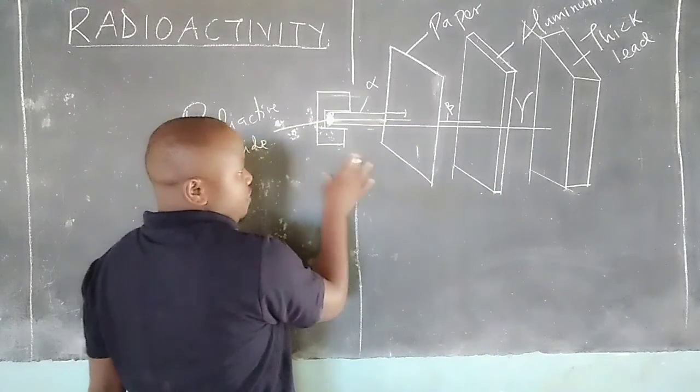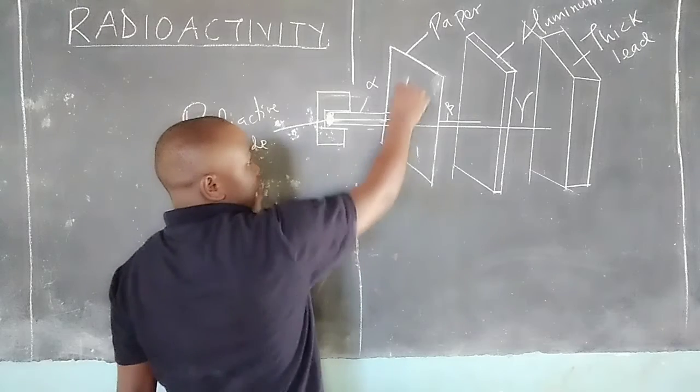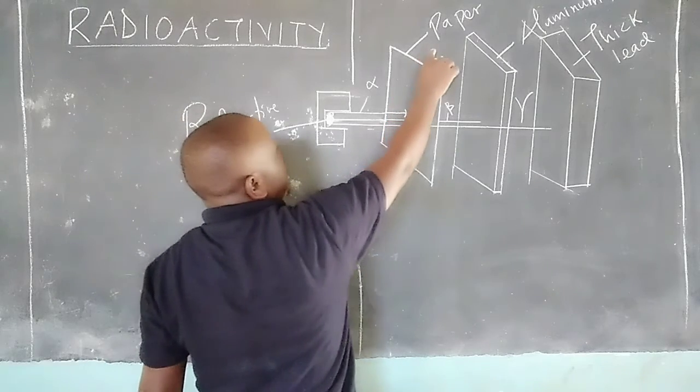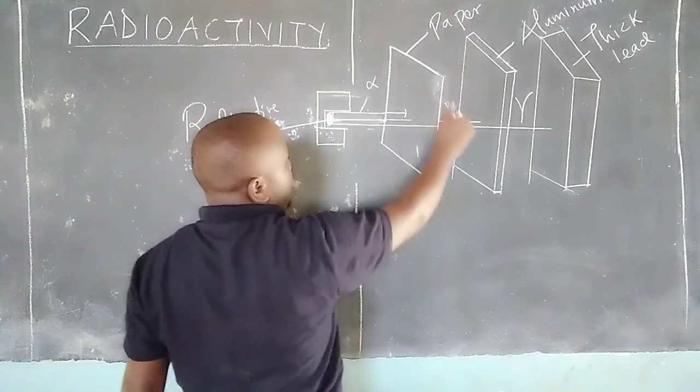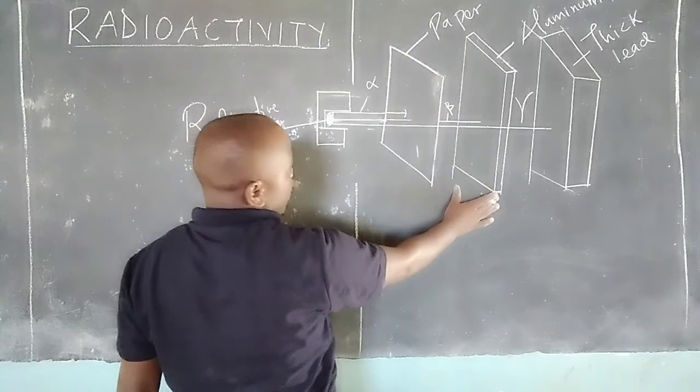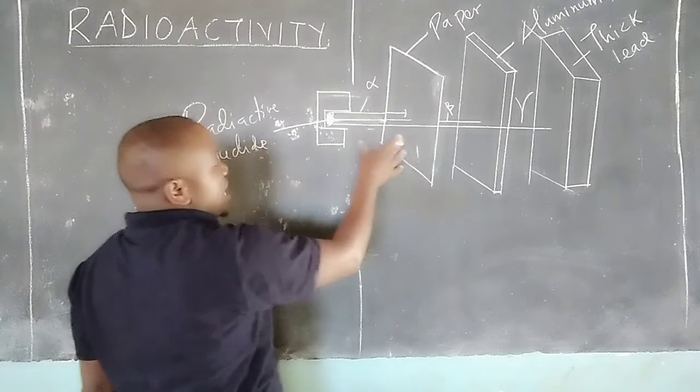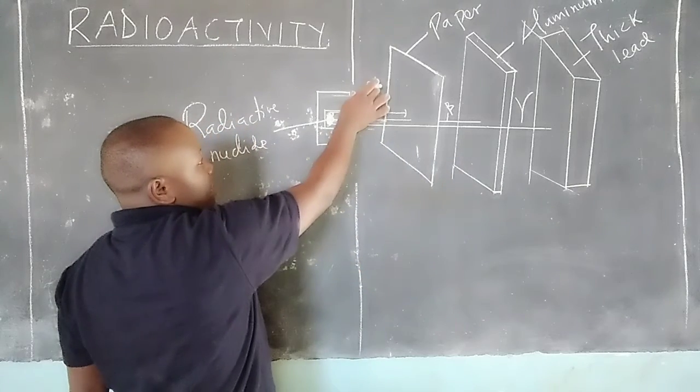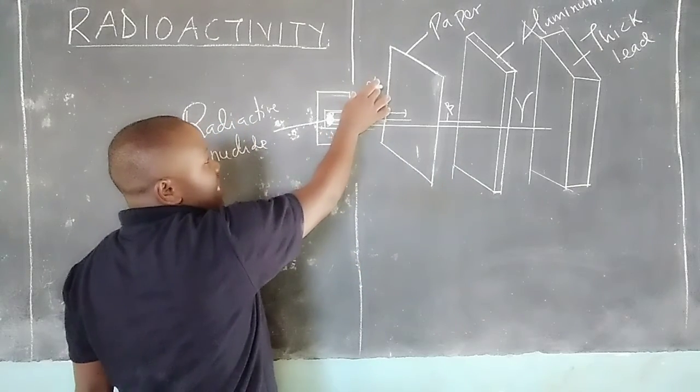Beta particles follow, which are able to penetrate paper but get blocked by aluminium. Then finally we have alpha particles, which are moving very slowly.